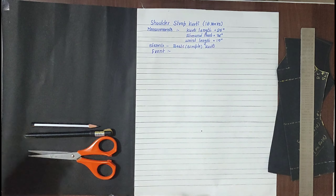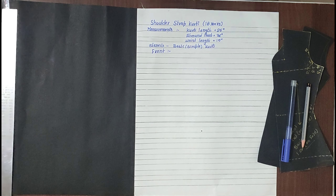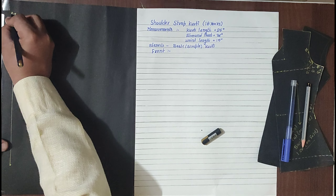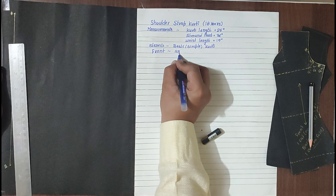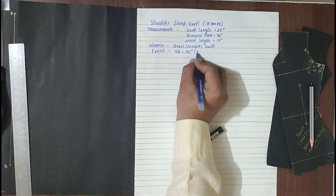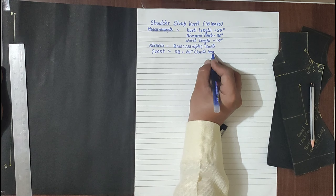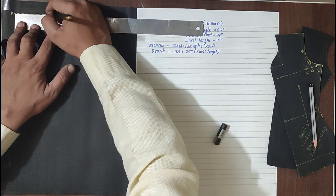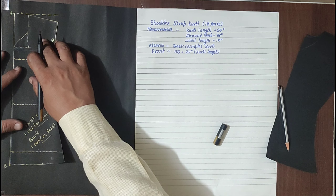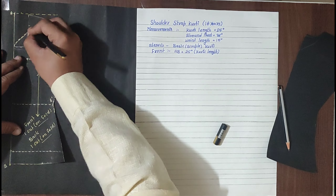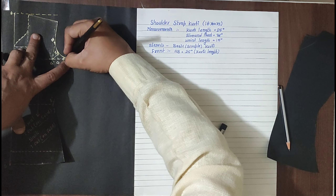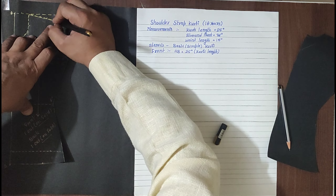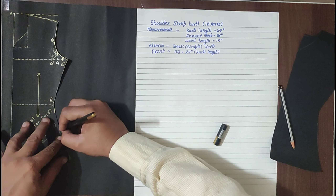Let us start with the front drafting process. For the front, first we will take a line AB on fold, where A to B is equal to 25 inches — that is the kurti length. We will square out an imaginary line from point A, perpendicular to A, and we will trace the front kurti or front bodice block, keeping its shoulder point at the imaginary line and the fold line on the centre front.